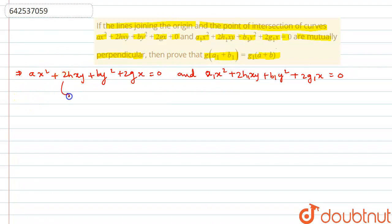So, from the first equation, if we find the value of 2x, that will be equal to minus of ax² plus 2hxy plus by² whole divided by g. This is the value of 2x and we will put this value of 2x in this equation here.